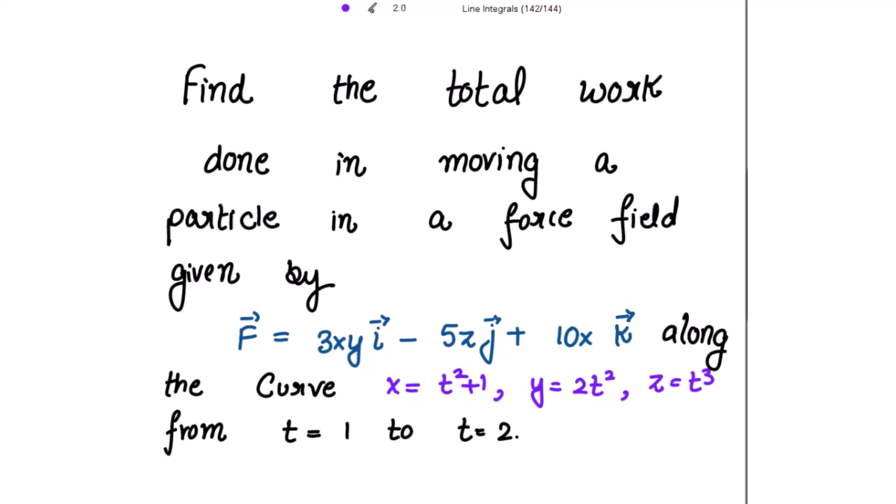We need to find the total work done in moving a particle in a force field given by the F vector along the curve x = t² + 1, y = 2t², and z = t³, from t = 1 to t = 2.